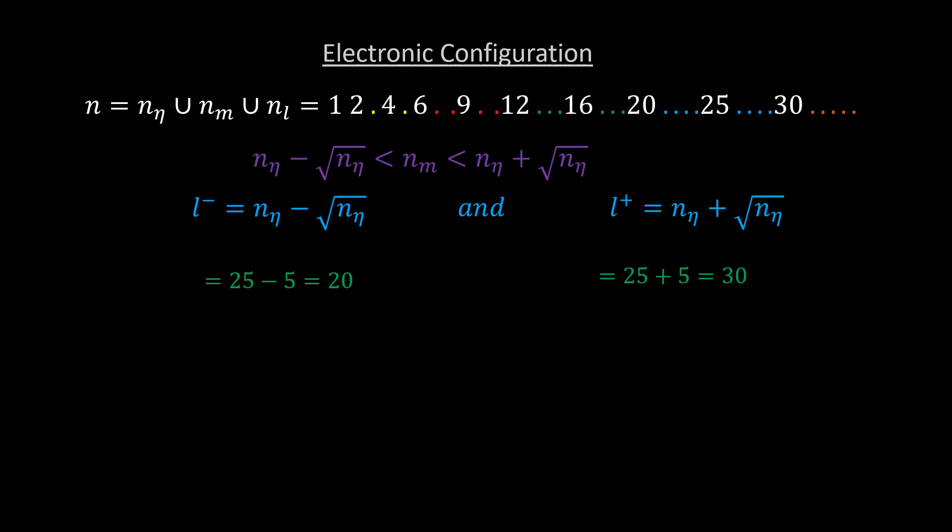This means nm will take values between 20 and 30. And there are a square root of 25 minus 1 of them, to the right and to the left of 25. That is, 5 minus 1, which is equal to 4. So we have 4 nm's to the right and to the left of 25. You can do this for any n eta in the sequence.